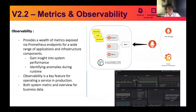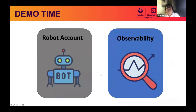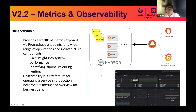For metrics: it becomes complex as the number of Harbor components grows, and with that grows the need to monitor services around the cloud to maintain healthy functionality. Observability is a key feature for operating a service in production. In version 2.2, Harbor provides a wealth of metrics exposed via a Prometheus endpoint. The observability can give a much more in-depth view of what your Harbor is doing — you can gain insight into system performance or identify anomalies in real time. Let's start the demo.